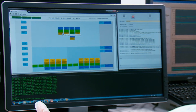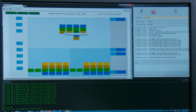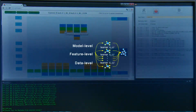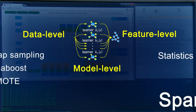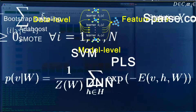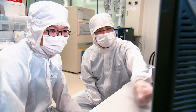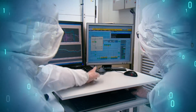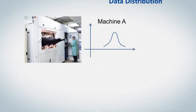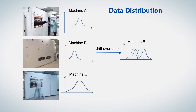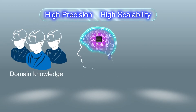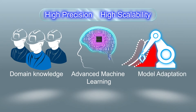ITRI's Prognostic and Health Management Software in Semiconductors, PHM, uses multi-level ensemble learning techniques, which integrate a variety of advanced machine learning algorithms with domain knowledge, along with model adaptation techniques to cope with individual equipment characteristics and drift in environmental conditions. PHM provides high-accuracy fault diagnosis and prognostic technologies.